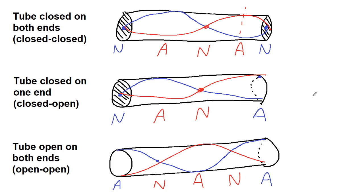So the tube closed on one end is kind of the odd one out here, because you can't get an even number of wavelengths, because your starting and ending conditions are different from each other.